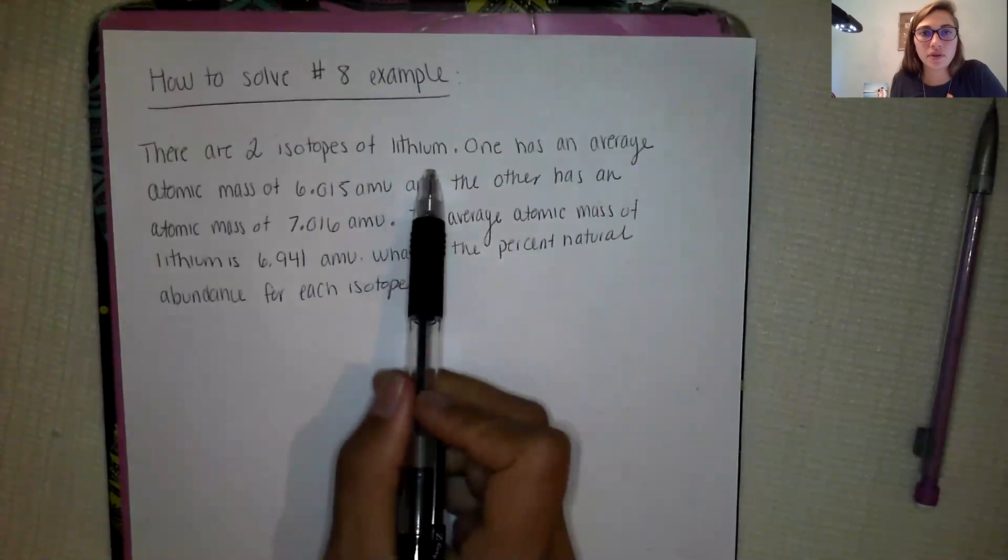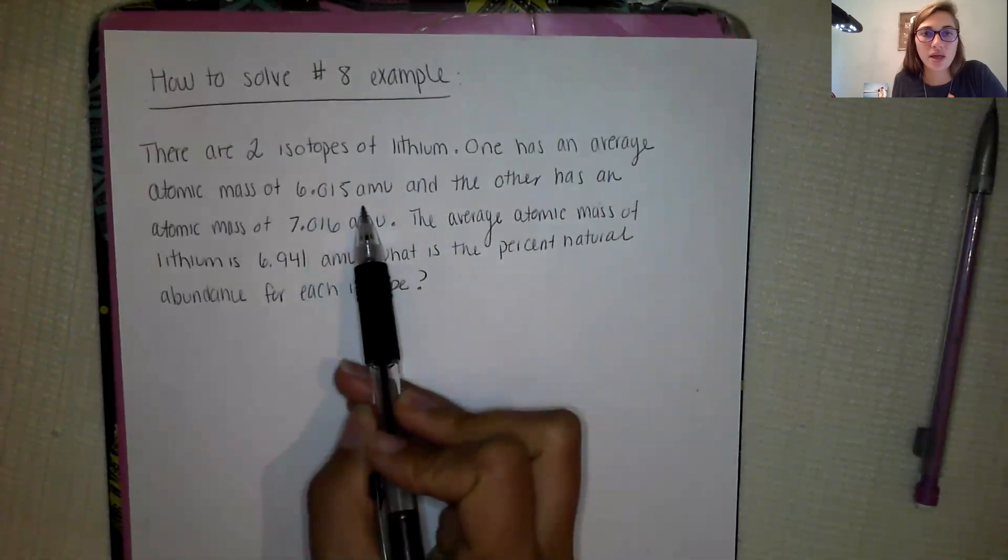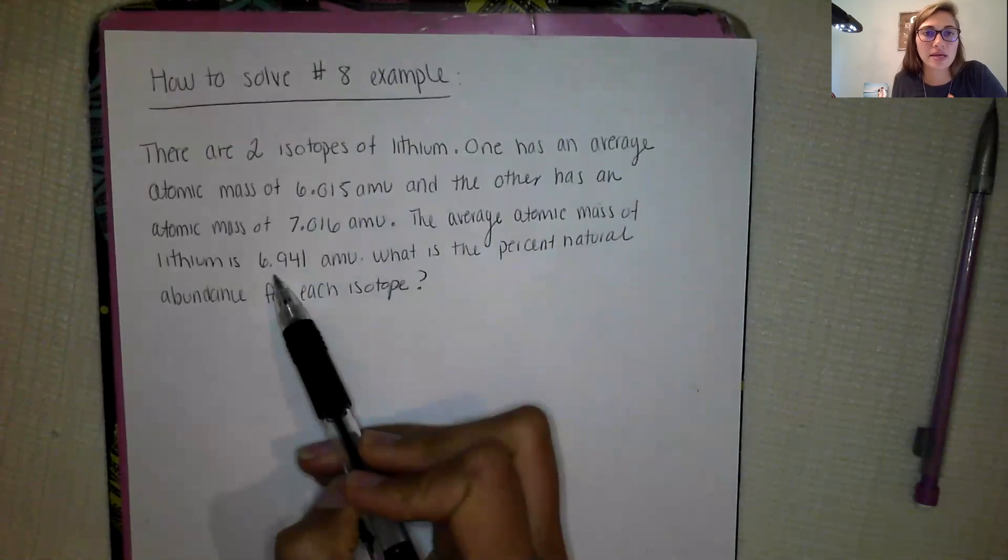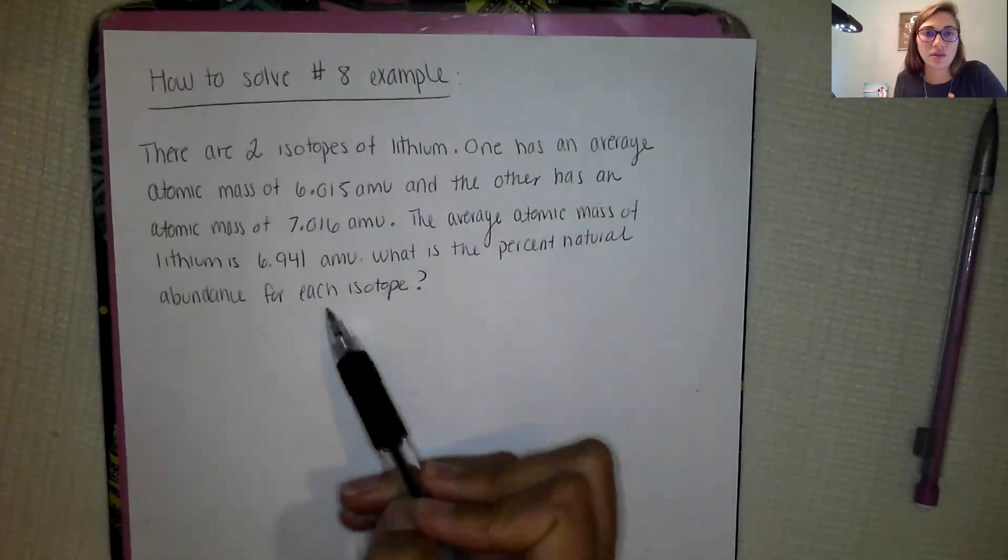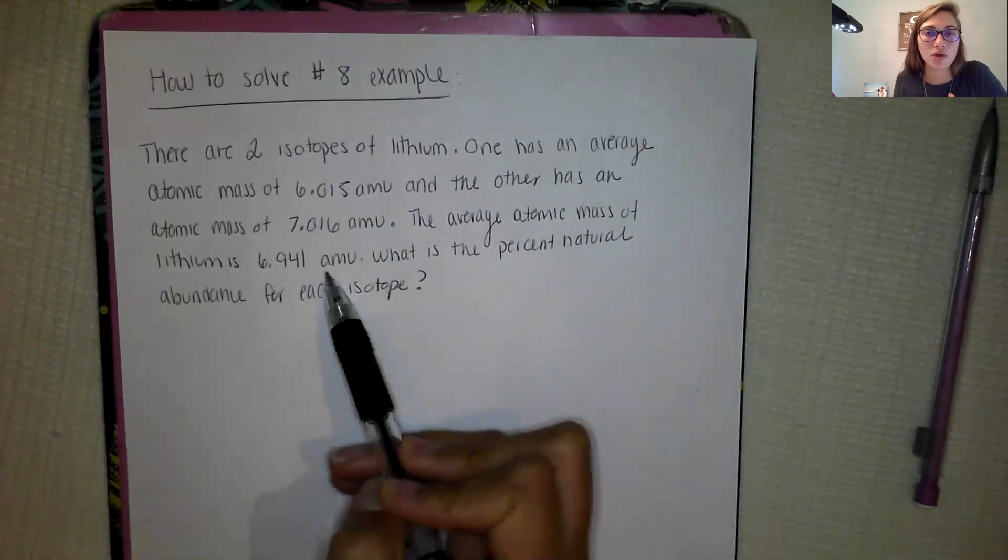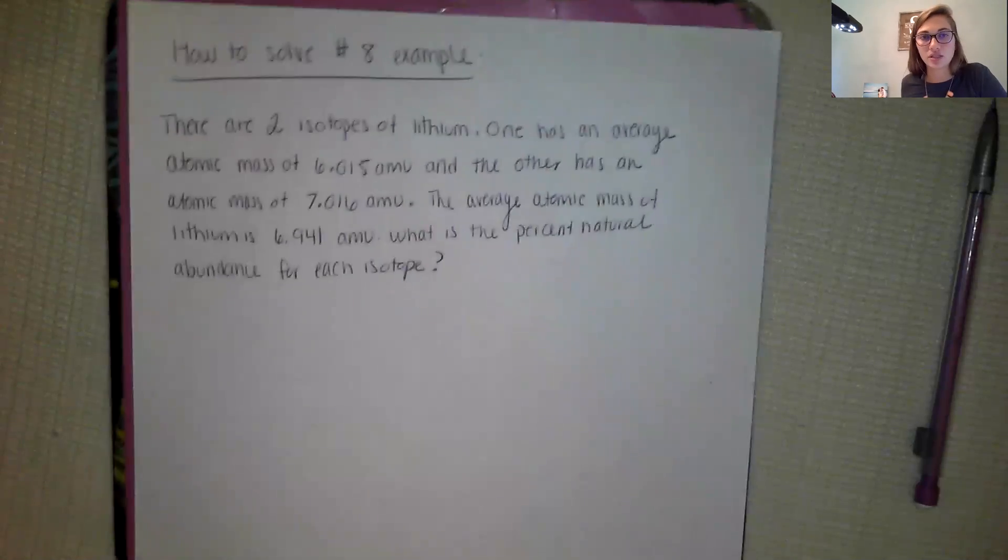So there are two isotopes of lithium. One has an average atomic mass of 6.015 AMU and the other has an atomic mass of 7.016 AMU. The average atomic mass of lithium is 6.941 AMU and we want to know the percent of natural abundance for each isotope.